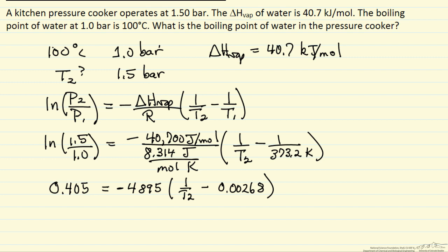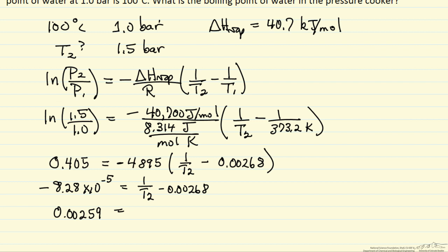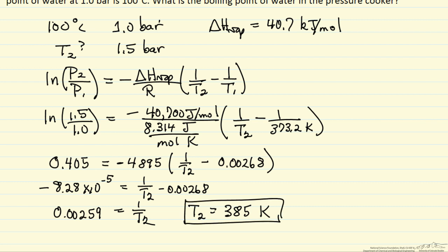Here I show the intermediate calculations: I have taken the log and divided 40,700 by the gas constant. Doing the math, I get 1 over T2, and solving for T2, I end up with 385 kelvin to 3 significant figures, or about 112 degrees C. So we have raised the temperature, which of course raises the rate of reaction during the cooking process.